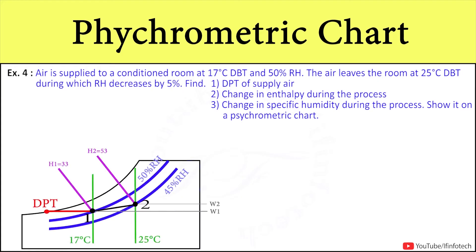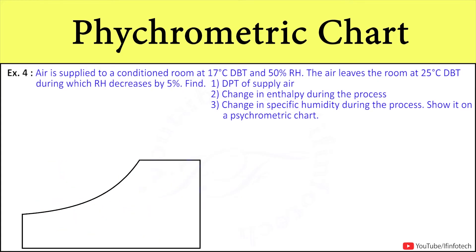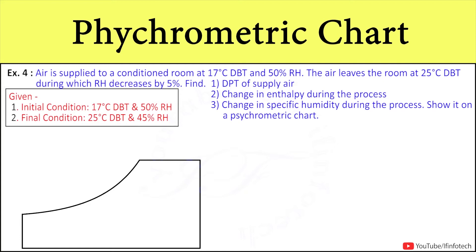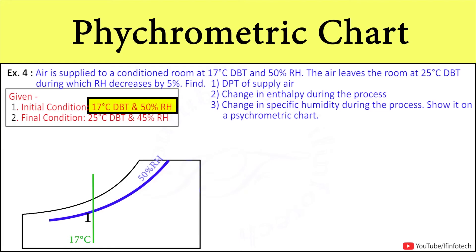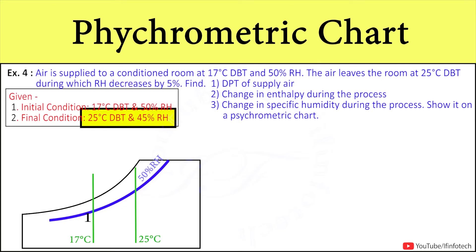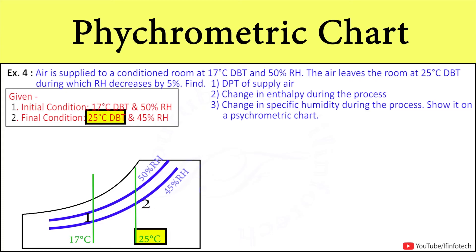We have to plot the process on the psychrometric chart. First, we will write down the data which has been provided. The given data for properties of air at initial condition is 17°C dry-bulb temperature and 50% relative humidity, and for final condition it is 25°C dry-bulb temperature and relative humidity decreases by 5%, that is 45% relative humidity. Dry-bulb temperature has increased from 17°C to 25°C from initial to final condition, so we mark both initial and final conditions on the psychrometric chart.